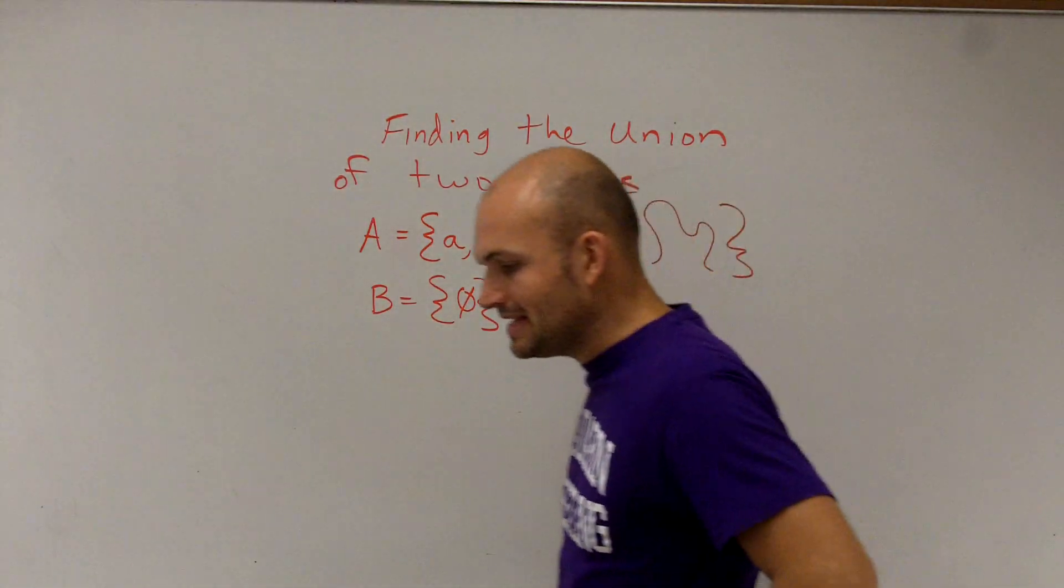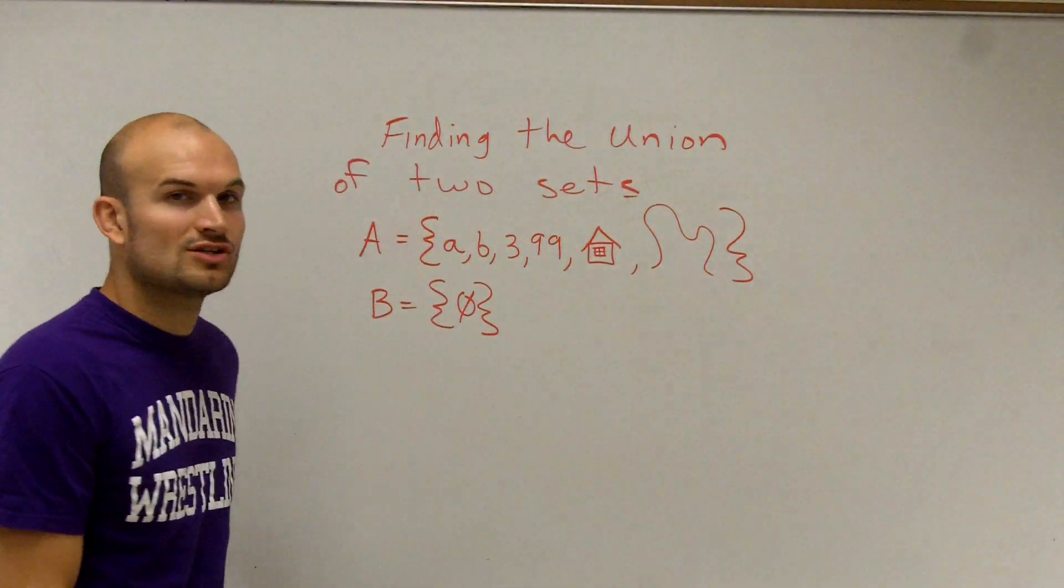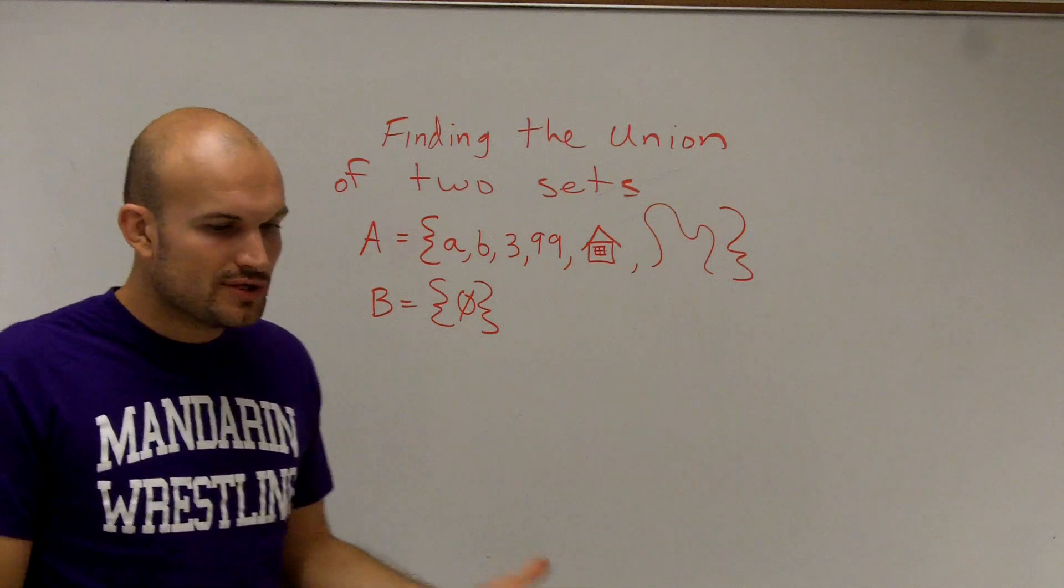Then, in the set contained B, there is nothing, right? That's what we call a null set or an empty set. So when we're trying to find the union,